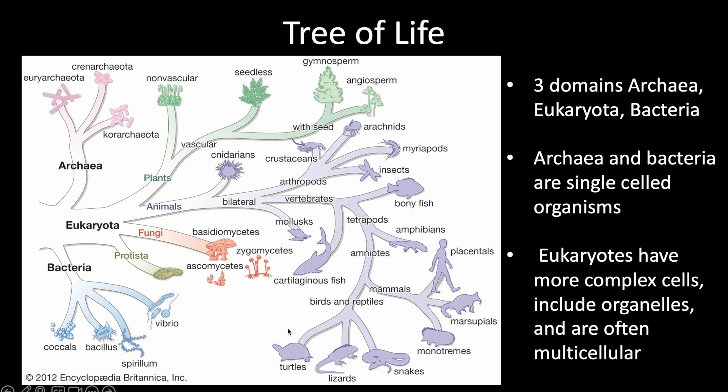We break Eukaryota down into a few main kingdoms: Protista, Fungi, Animals, and Plants. Each of these has their own groups, and this could be expanded upon quite drastically, but this is a simplified explanation of where we see a lot of variation today.